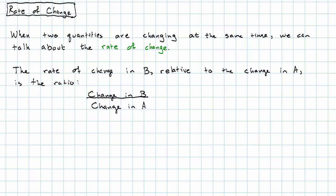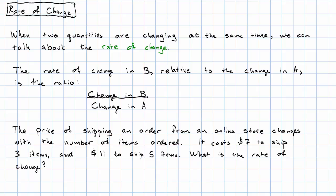Let me give a specific example. Suppose the price of shipping an order from an online store changes with the number of items ordered. It costs $7 if you want to ship three items and $11 if you want to ship five items. What is the rate of change?